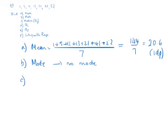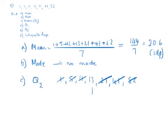So how do we calculate the median, Q2? Well, what you do is make sure the numbers are in order — 1, 5, 11... and they are in order already. If they weren't you'd have to put them in order, and then cross off to find the median. The median would be 13, so Q2 is 13. Remember, if you're left with two numbers in the middle, you'd have to find the mean of those two numbers.